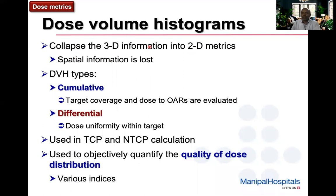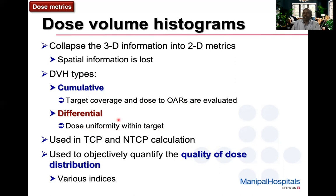The dose volume histogram is a very useful tool because it collapses 3D information — which may be difficult to comprehend — onto a 2D matrix. The difficult part is that we lose information about spatial location. There are two types: cumulative and differential. The cumulative DVH is most often used, to evaluate target coverage and dose to organs at risk. Differential DVH is very rarely used and tells us about dose uniformity within the target.